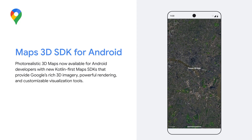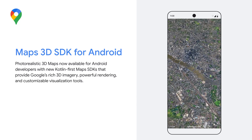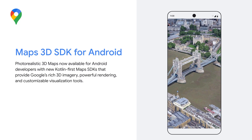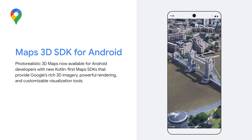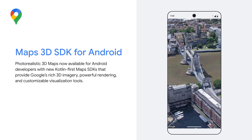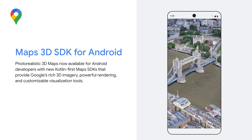This immersive visual experience lets users engage with the world in a completely new way. They can explore everything from soaring city skylines to breathtaking canyons and even discover hidden gems in new neighborhoods, all in stunning detail with incredible realism. So, are you ready to add another dimension to your mobile mapping apps? Let's dive in and see how it works.